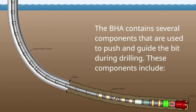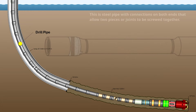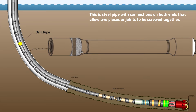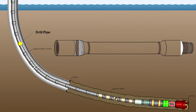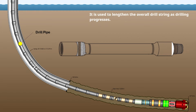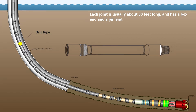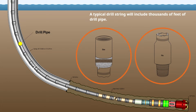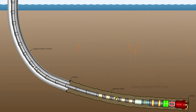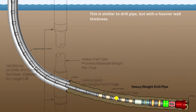The BHA contains several components used to push and guide the bit during drilling. The first is drill pipe: steel pipe with connections on both ends that allow two pieces, or joints, to be screwed together. It is used to lengthen the overall drill string as drilling progresses. Each joint is usually about 30 feet long and has a box end and a pin end. A typical drill string will include thousands of feet of drill pipe.